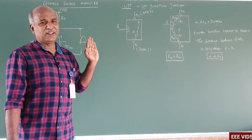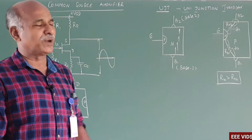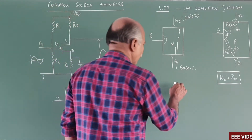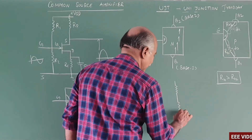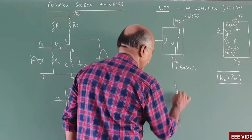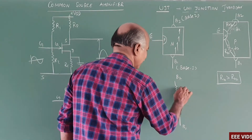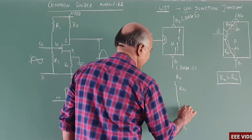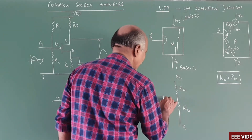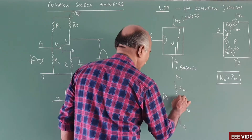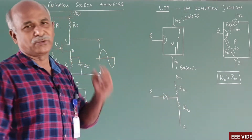In the UJT, there are three terminals: base-1, base-2, and emitter. Looking at the equivalent circuit, between base-1 and base-2 there are two resistances — R-B1 and R-B2. In between these two resistances, the emitter P-N junction is connected at the emitter terminal.